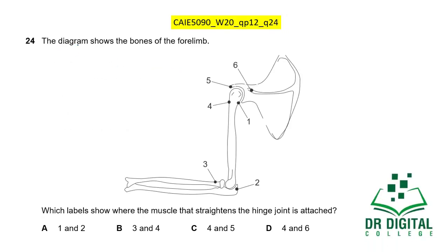In this question, the diagram shows the bones of the forelimb. Which labels show where the muscles that straighten the hinge joint are attached? Straightening a joint is extension, so the extensor muscle must be present at the relevant attachment point. The extensor muscle must be between point 1 and point 2. The answer is A.